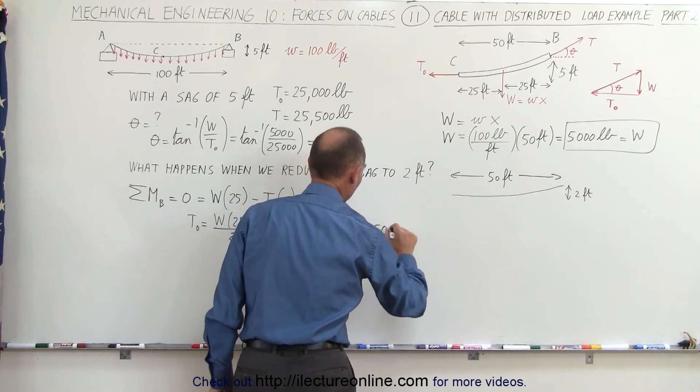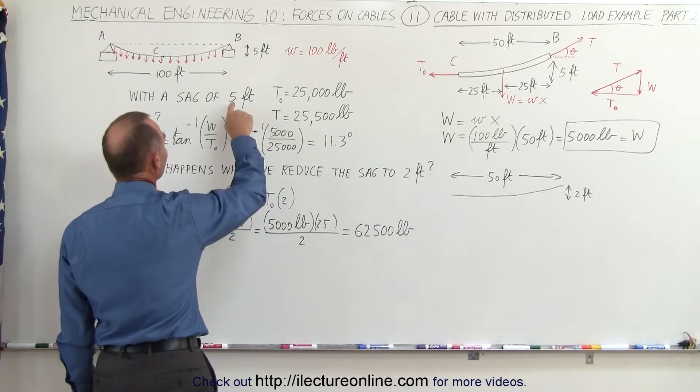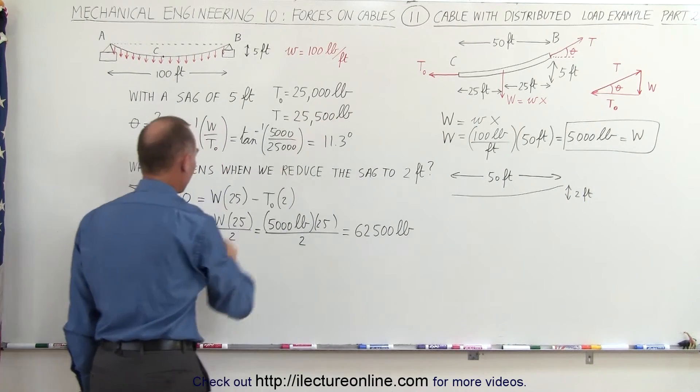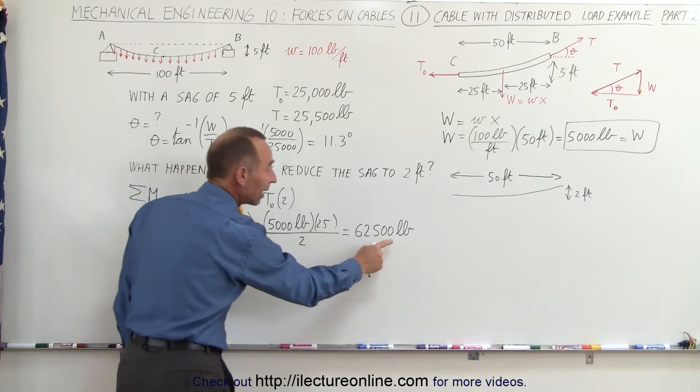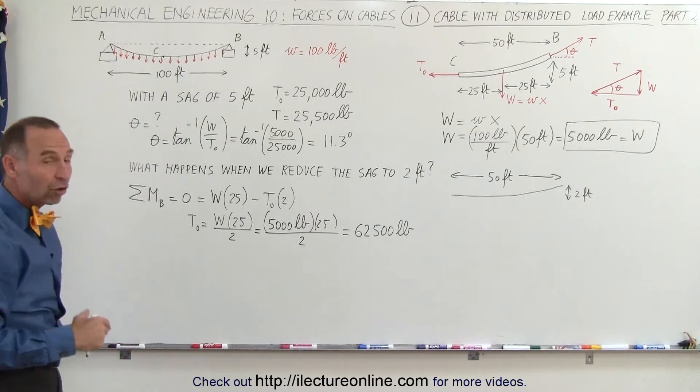62,500 pounds, so see how that's now changed. When they have a sag of five feet the tension was 25,000 pounds, but with a sag of only two feet the tension has more than doubled, two and a half times the original tension.